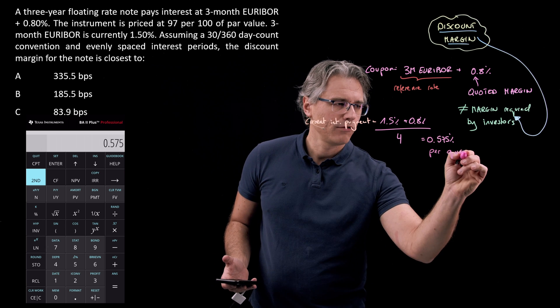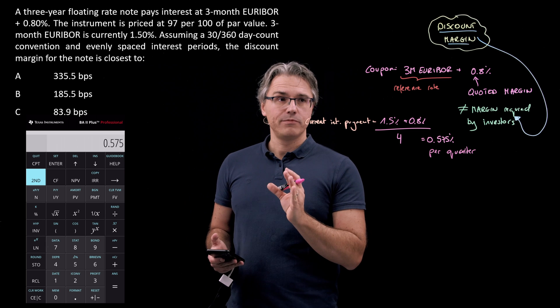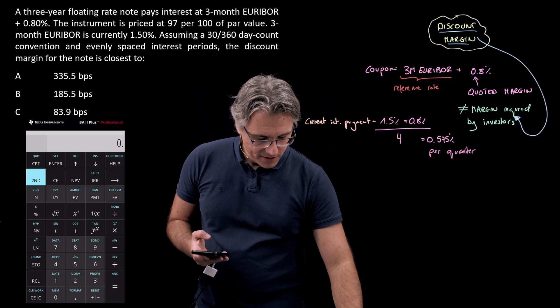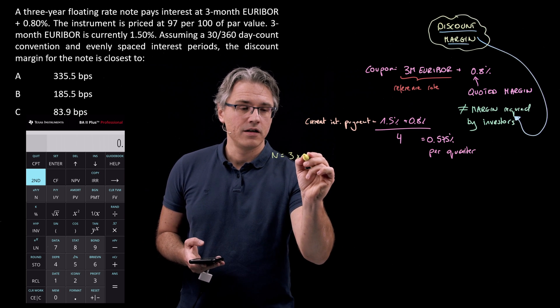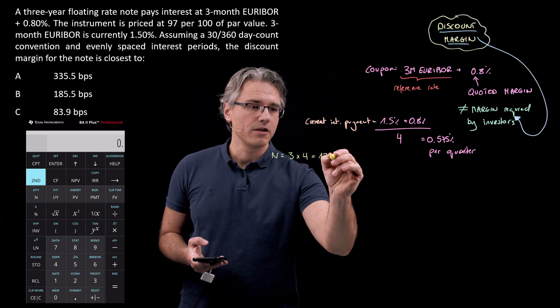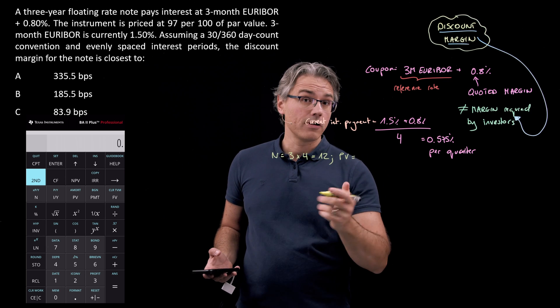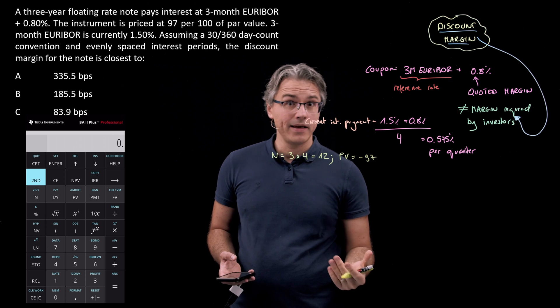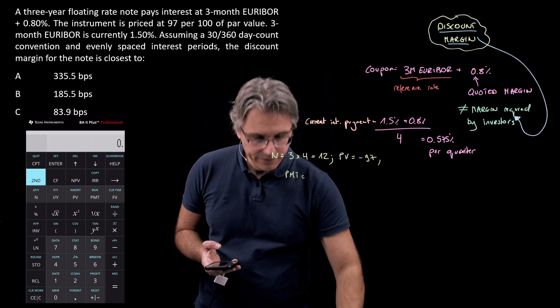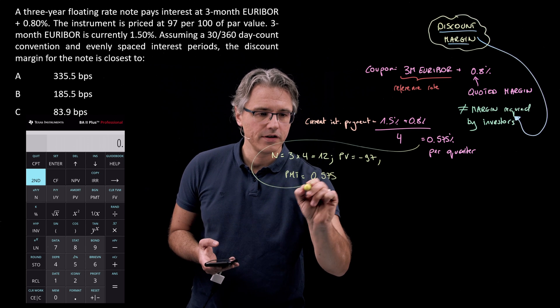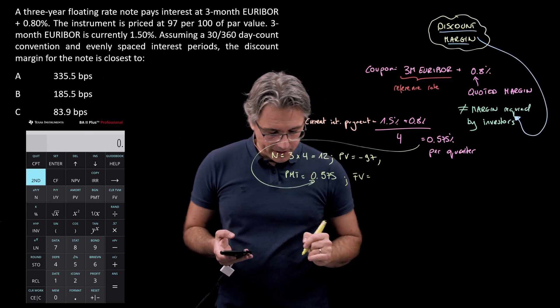I'm going to use this number for the TVM worksheet on the calculator. For N, the number of periods: it's a three-year note with quarterly frequency, so 3 times 4 equals 12 periods. For PV, the present value, we were told the price is 97. Let's make this negative because we're paying for it. For PMT, the payments, I'm going to use 0.575, what we just computed. For FV, that's obviously going to be 100.